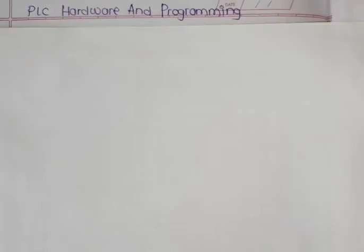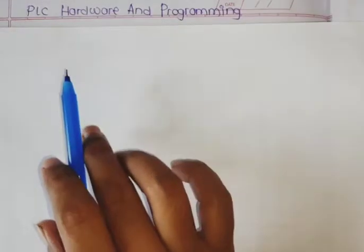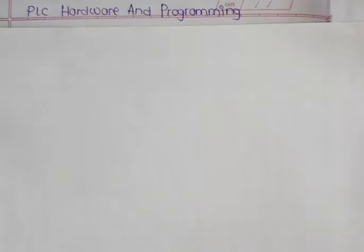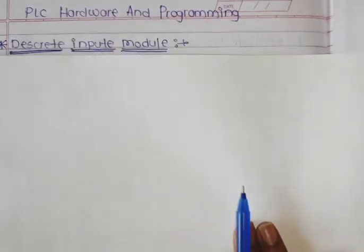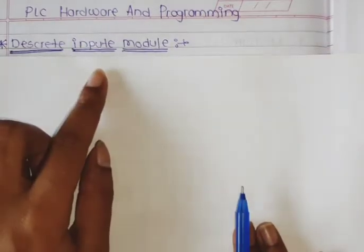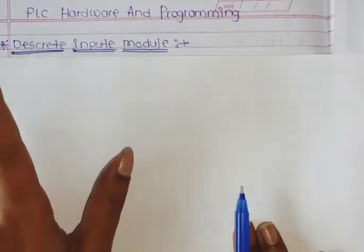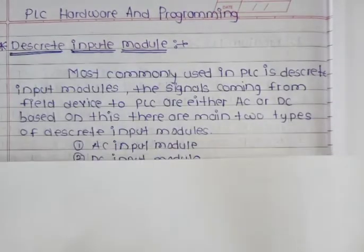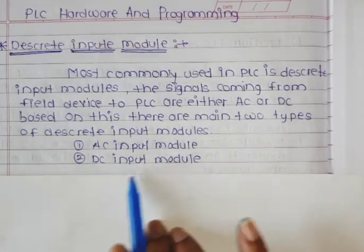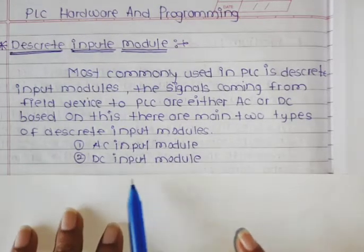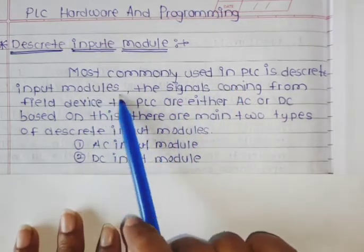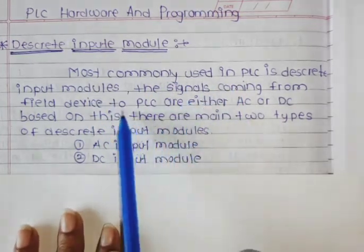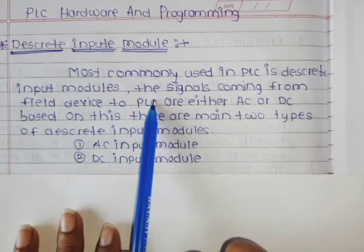Hello students, today we see the next topic: PLC hardware and programming. In PLC hardware and programming, we see the discrete input module. In the discrete input module there are two types: AC input module and DC input module. The most commonly used in PLC is the discrete input module.